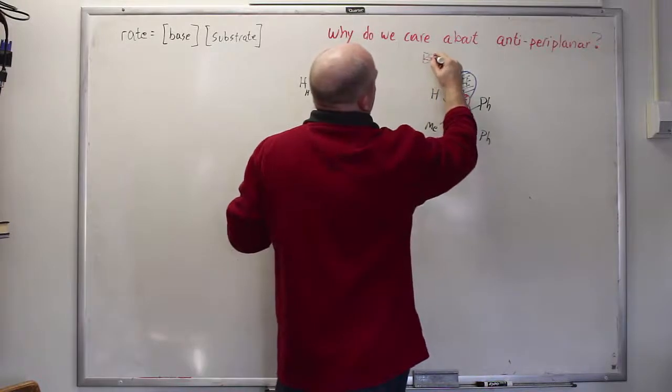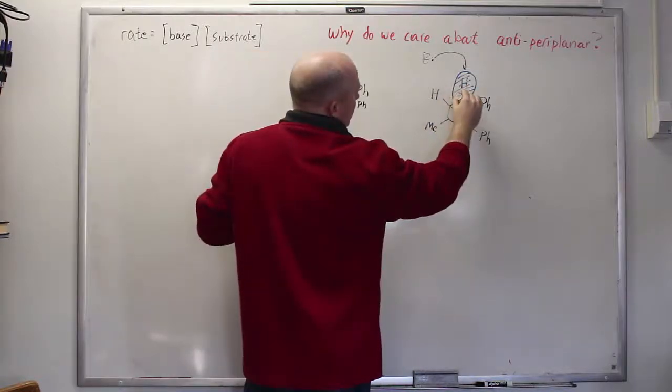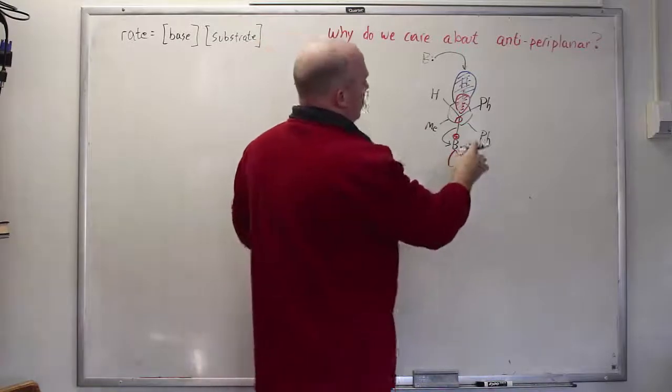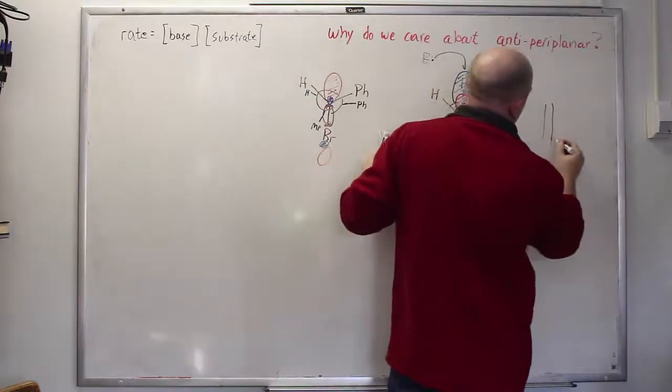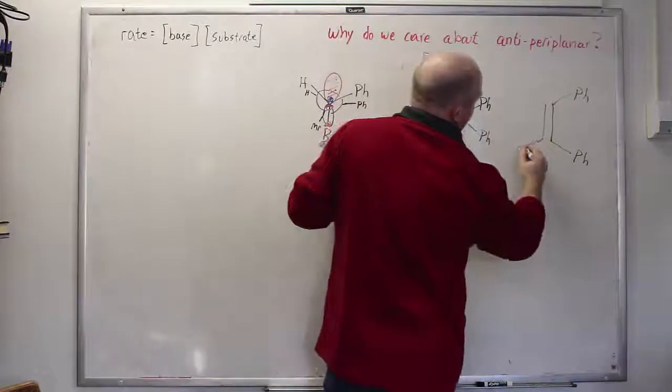And so if a base were to come by and attempt to deprotonate it would cause the electron density to flow into that hydrogen that would then flow into the sigma star orbital which would then flow there. The outcome is going to be a double bond where both phenyls are on the same side and the methyl is opposite.